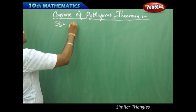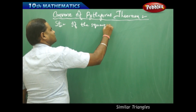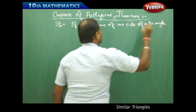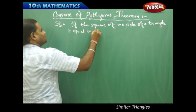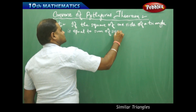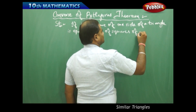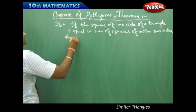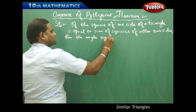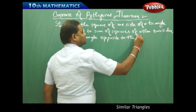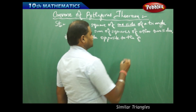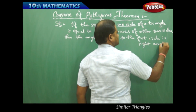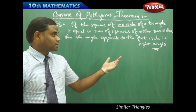The statement is: if the square of one side of a triangle is equal to the sum of squares of the other two sides, then the angle opposite to that first side is a right angle — that is, 90 degrees.